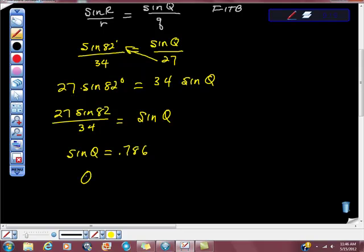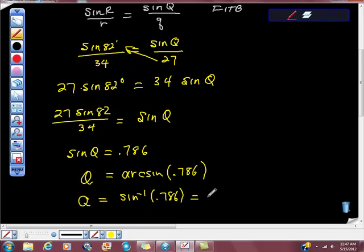So Q is equal to arc sine of 0.786. And if you don't like arc sine, then Greg said that I should say inverse sine of 0.786, which turns out to be about 52 degrees. So about equal to 52 degrees.